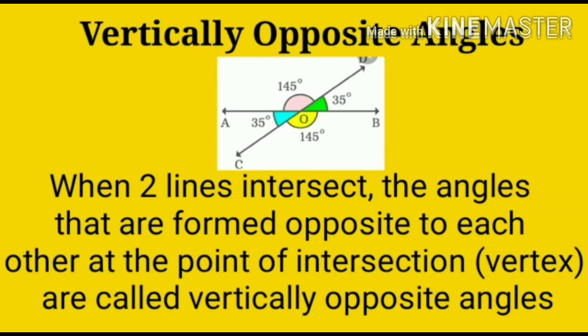Vertically opposite angles: when two lines intersect, the angles formed opposite to each other at the point of intersection are called vertically opposite angles. In this picture, angle AOC is vertically opposite to angle DOB, and angle AOD is vertically opposite to angle COB.